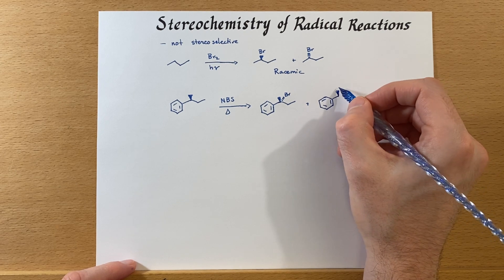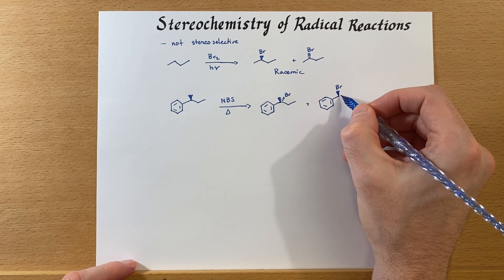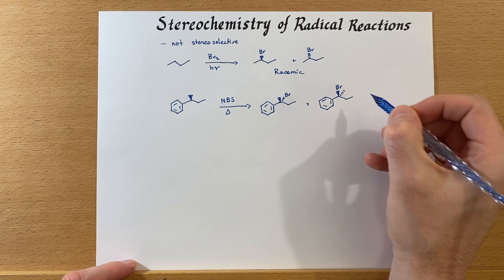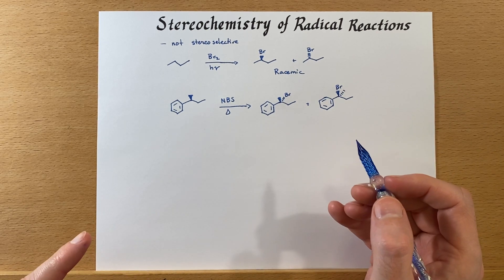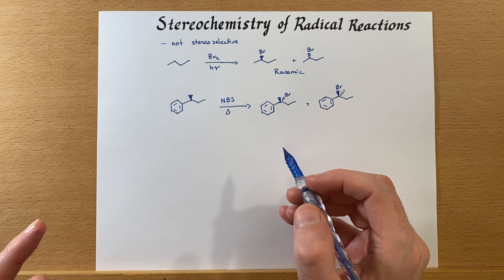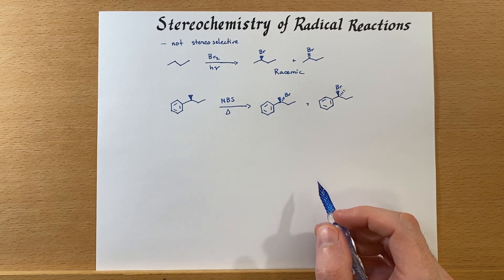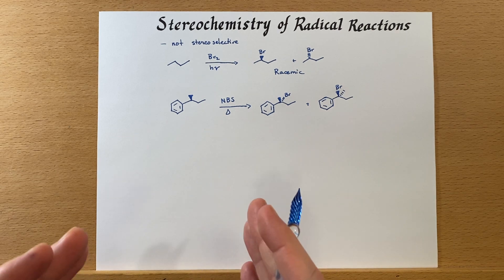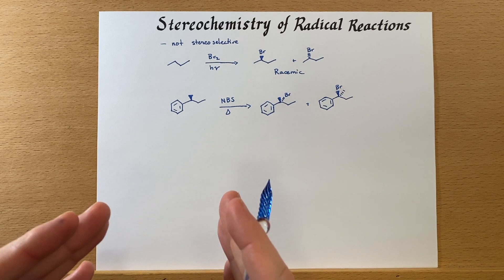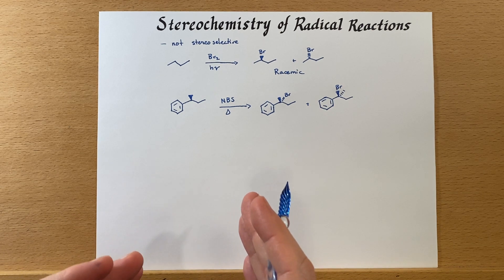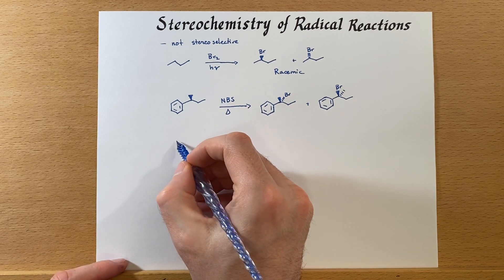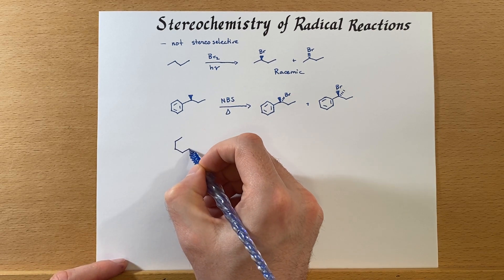Which could be unfortunate, and that's one of the reasons why sometimes we would like to avoid a radical reaction, especially if we're trying to target a specific stereoisomer. That is just not quite possible when we're doing radical reactions.